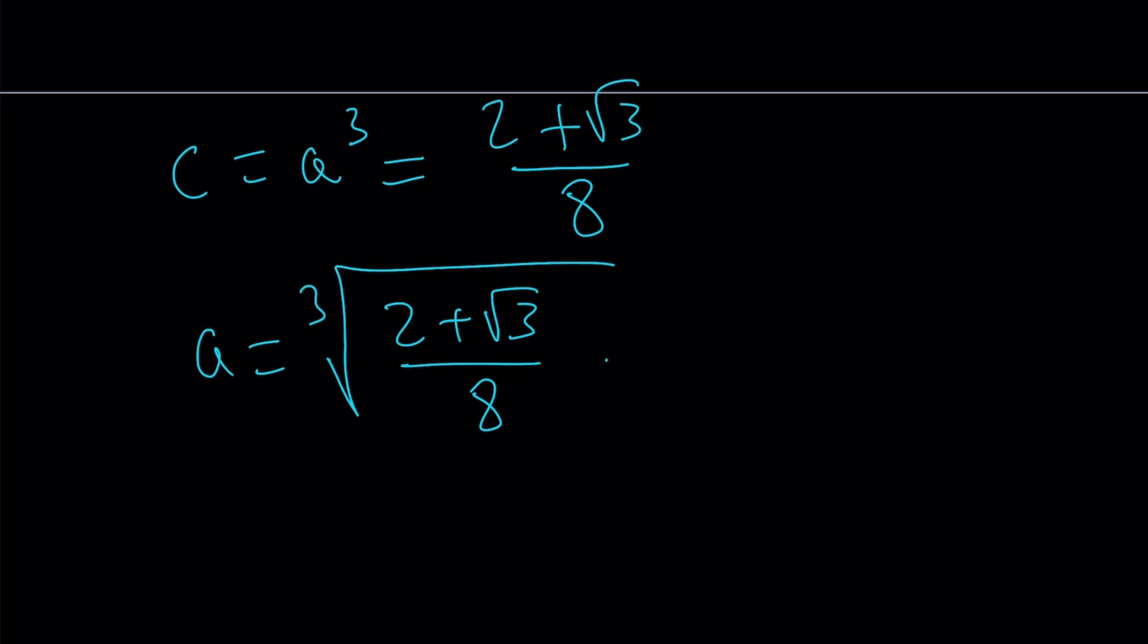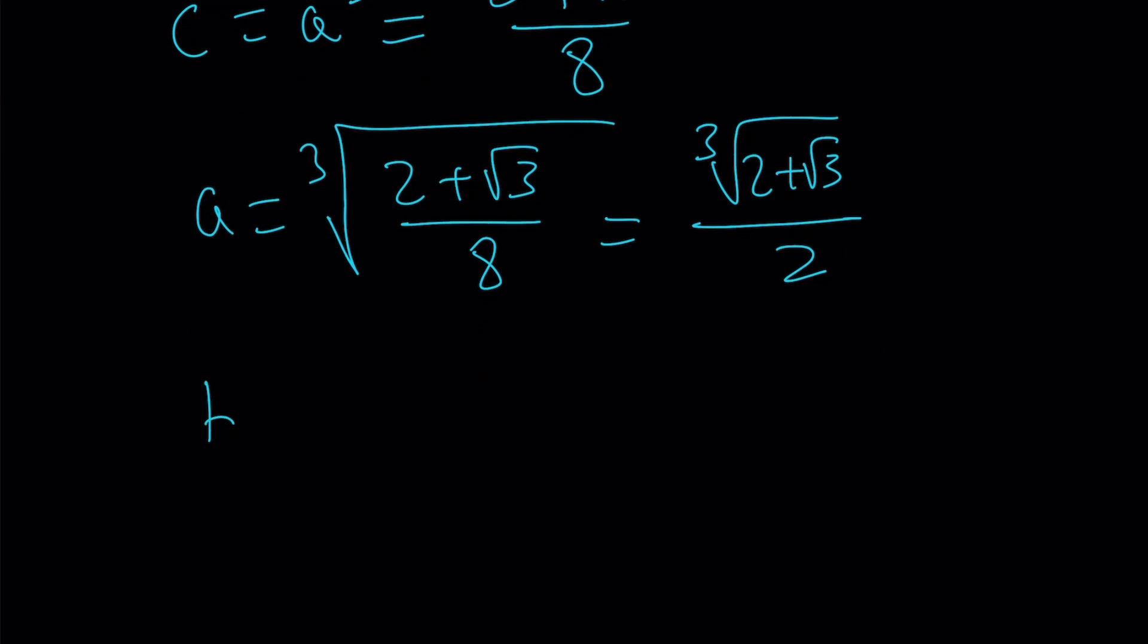Now, remember, that's a cube root, so I can basically simplify this as the cube root of 2 plus root 3 all over 2. Awesome. And B is going to be similarly because C is also equal to B cubed, and B is just going to be the other root cube rooted. So that's going to be this one. And from here, B becomes the cube root of 2 minus root 3 over 2.